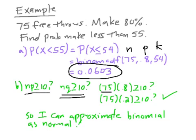Well, is that true? Well, n is 75, p is 0.8. So is 75 times 0.8 greater than or equal to 10? Well, it turns out it's 60. So yes, 60 is greater than 10. Is 75 times 0.2 greater than or equal to 10? This is n times q. Well, it turns out 75 times 0.2 is 15. So yes, 60 is greater than 10, and 15 is greater than 10. So I just showed that yes, now I can approximate this binomial as normal.